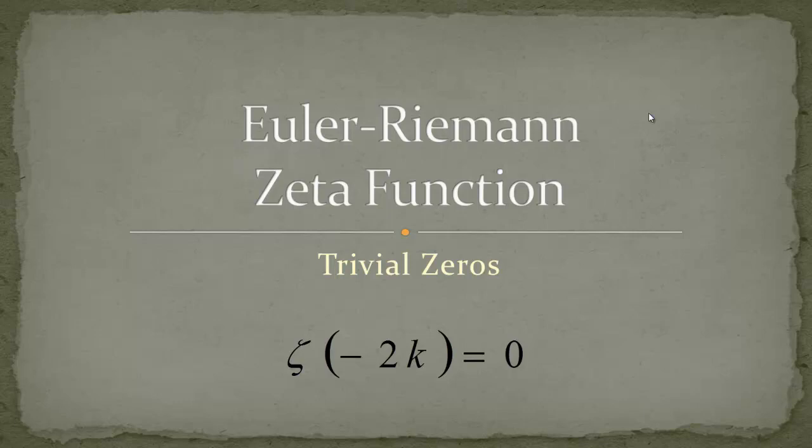They are called trivial because they don't have an important meaning in the distribution of the prime numbers. So these are just trivial and not important for the Riemann hypothesis.